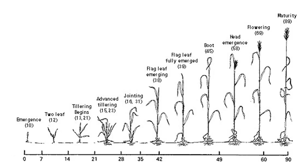When we deal with different kinds of grasses, as far as cereals, we have to be able to look at the different stages of growth that they go through. This allows us to put down a stage that everybody will understand. This particular one looks at a cereal grain. You start out with an emergence phase, then you get a two-leaf phase, then you get tillering.